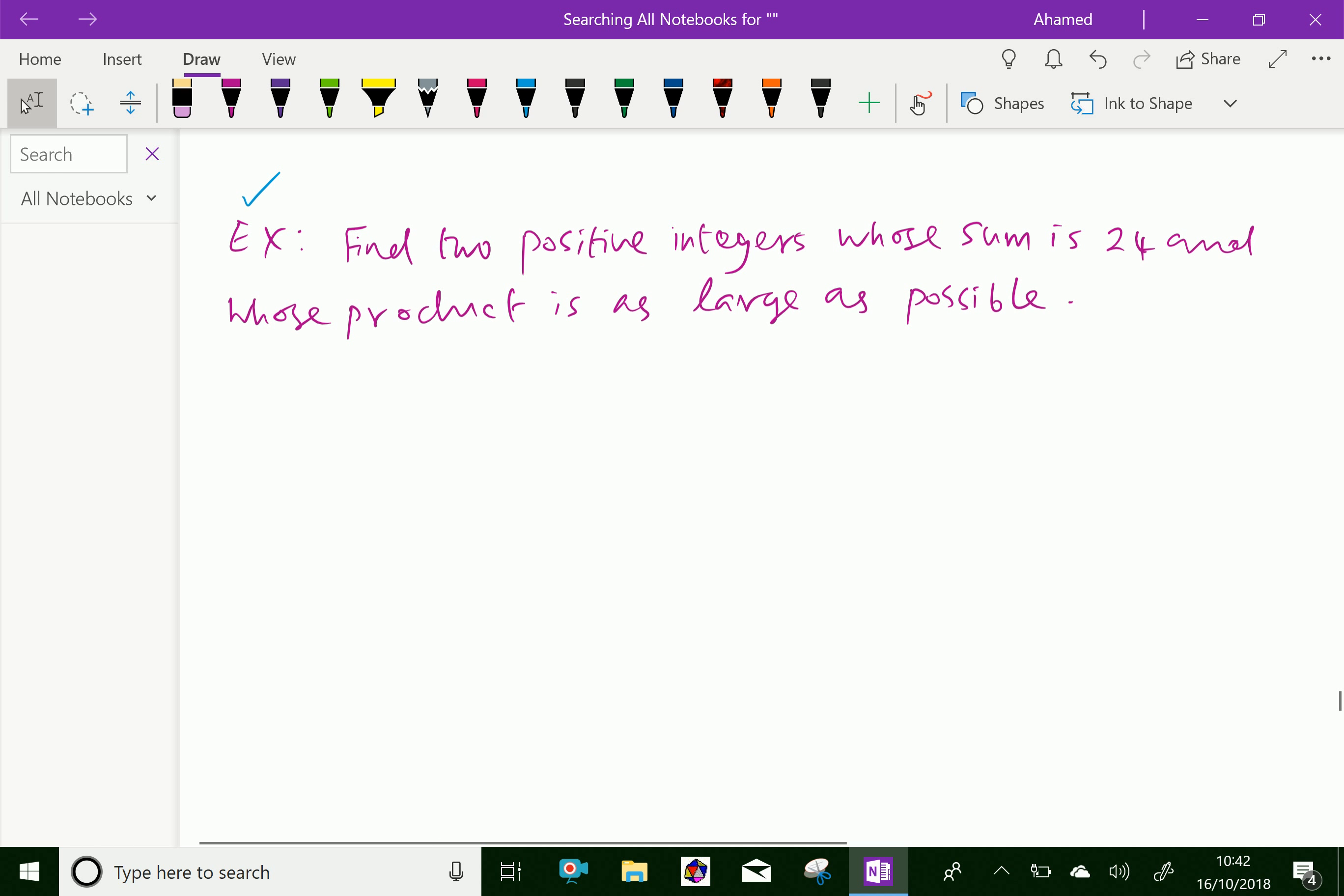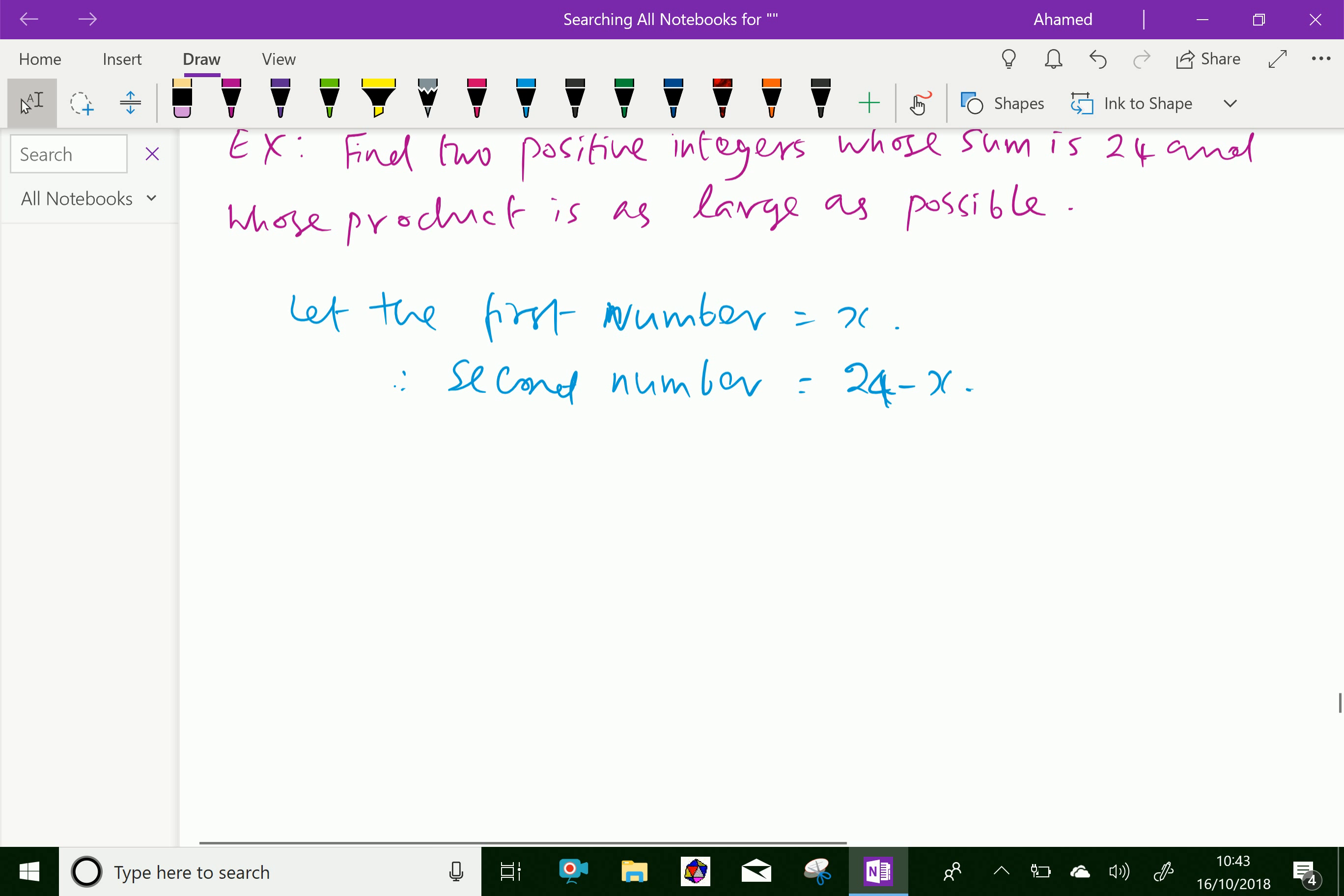Find two positive integers whose sum is 24 and whose product is as large as possible. Let the first number equal x, therefore the second number equals 24 minus x. The product P equals x times 24 minus x.